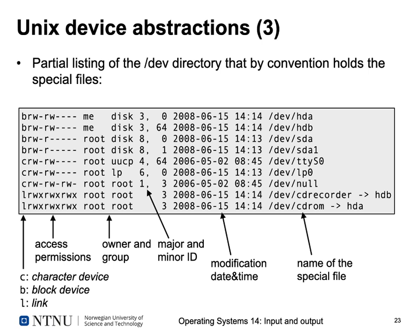In a regular file listing with ls, you would see a dash indicating a regular file or D for a directory. B and C are just additional types handled specially inside the kernel. Each device can have an owner, a group, and a modification date. For example, /dev/hda would be the first hard disk, /dev/hdb the second. /dev/sda is a SCSI hard disk, /dev/sda1 is a partition on it. /dev/ttyS0 is a serial interface. The first four entries are block devices and the remaining three are character devices: a serial interface, a printer, and /dev/null — a special virtual device that discards everything written to it.